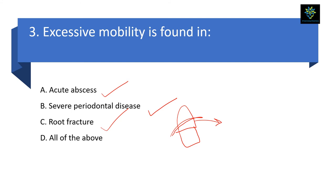Next question: excessive mobility is found in — Option A: acute abscess; Option B: severe periodontal disease; Option C: root fracture; Option D: all of the above. In acute abscess there can be mobility. In severe periodontal disease there is bone loss, so there will be mobility. Root fracture also causes mobility — if a tooth fractures, that part becomes movable. So the answer is Option D — all of the above.